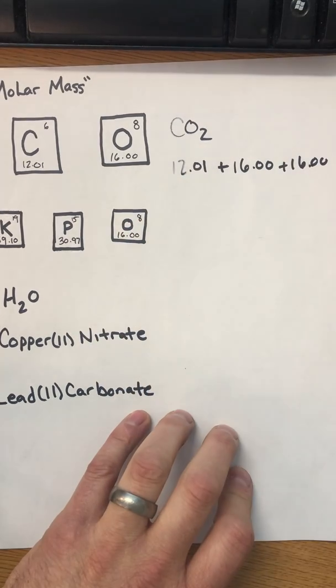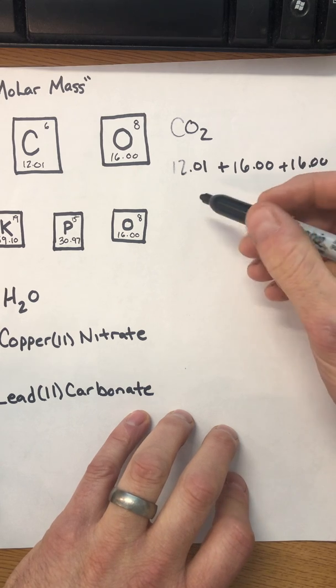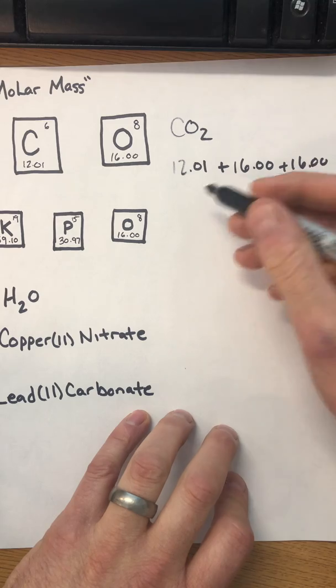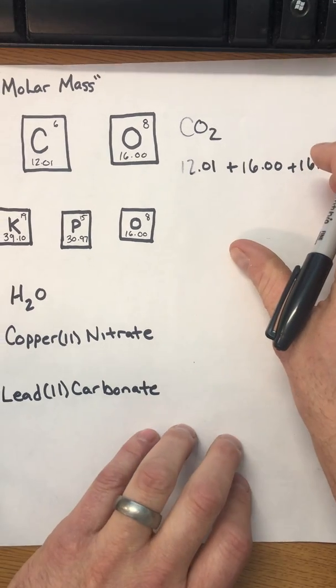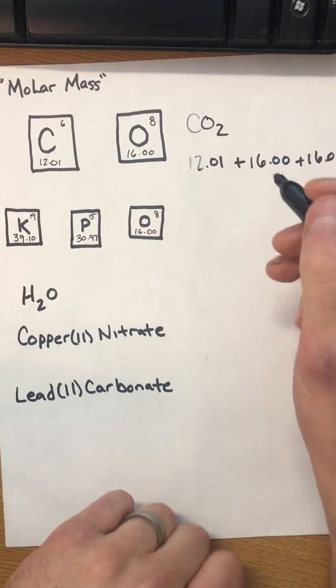And then on your calculator, you just add those numbers up and make sure that you report your final answer using the lowest number of decimal places provided, which is two in all these. So that's easy enough with a compound that might be a little bit more complicated.